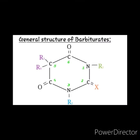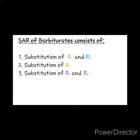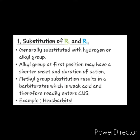This is the general structure of barbiturates, and modifications could be made at the 1st, 2nd, 3rd, and 5th positions. The SAR of barbiturates will consist of the following points: first, substitution at R1 and R2; second, substitution at X; and third, substitution at R3 and R4, that is, at position 5.